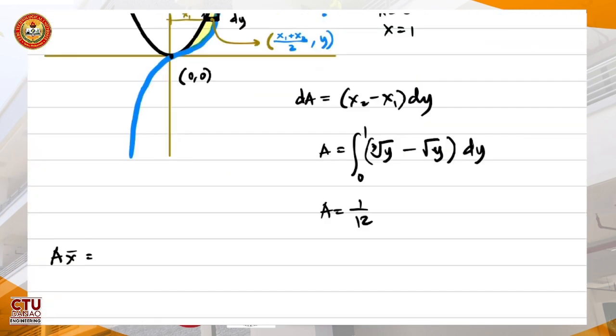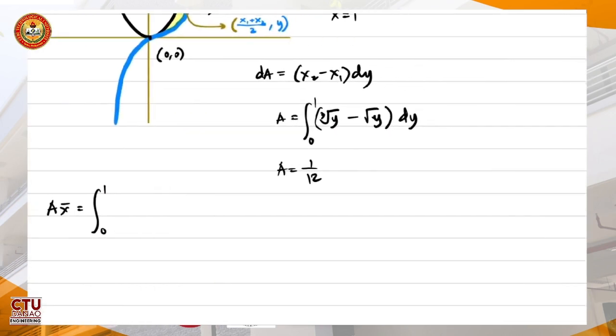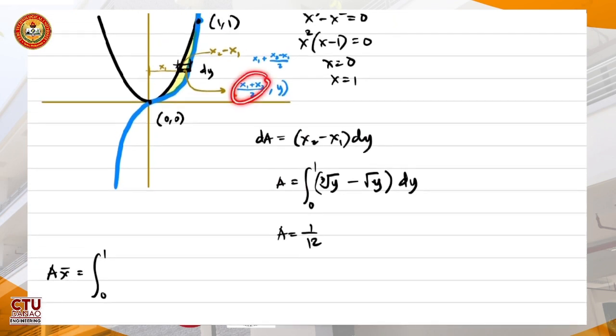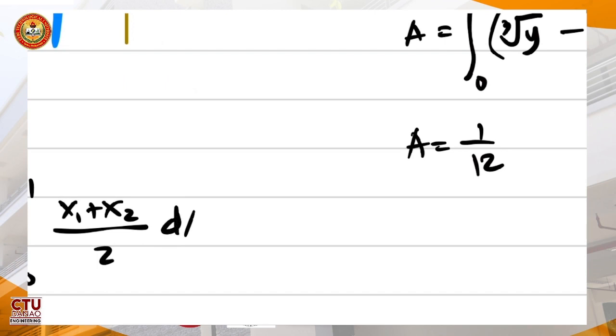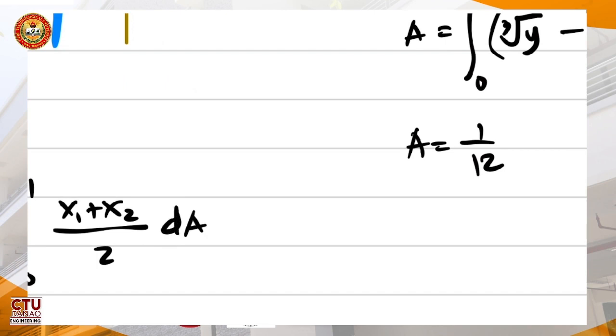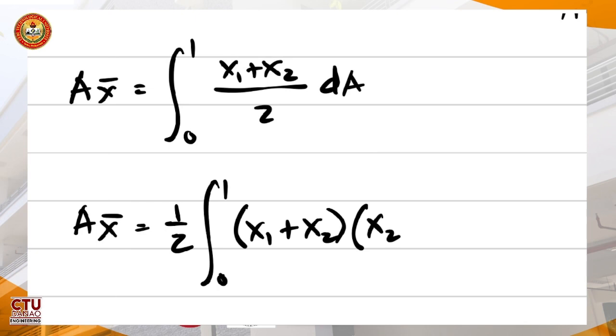So what is now A x bar? Integral from 0 to 1 of, yes okay, this average, x1 plus x2 over 2, times the differential area, da. Okay, right? So simplifying, we'll have one half integral from 0 to 1 of x1 plus x2. How about da? x2 minus x1 dy.